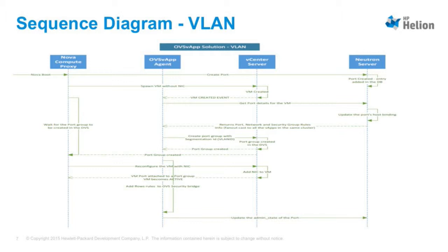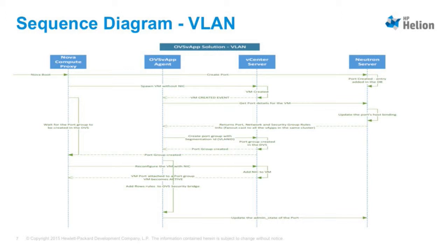This is the control flow for the VLAN case. We have a compute proxy running, and using that we boot a VM. The request goes to the Neutron server, which will have an entry in the database for that port. Nova compute — since we have a customized Nova VC driver — spawns the VM without NIC. We get a VM created event, and we contact the Neutron server using a get-port-for-device RPC call. After that, we get port details, create a port group, and Nova waits for that port. It configures the port, adds security group flows, and informs the Neutron server that everything is working fine.